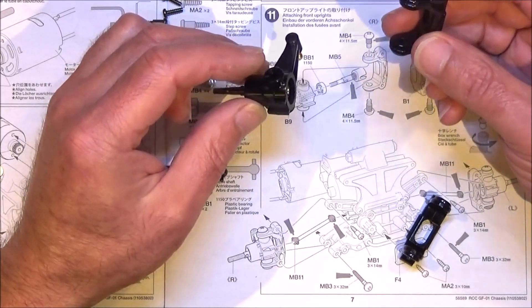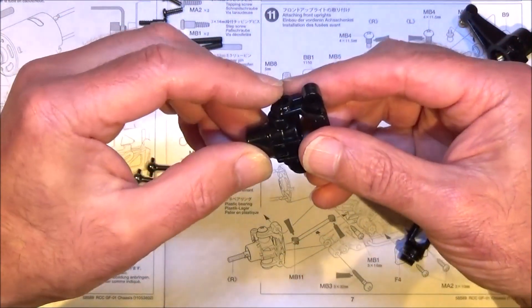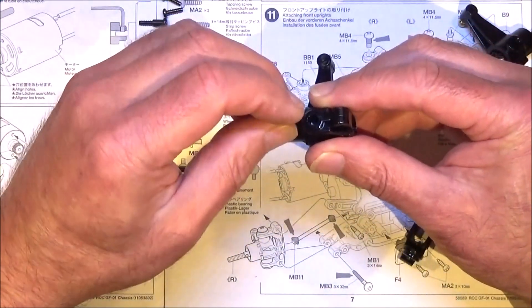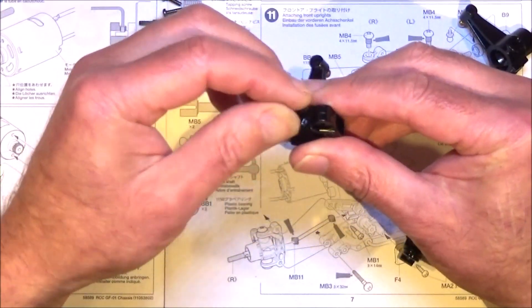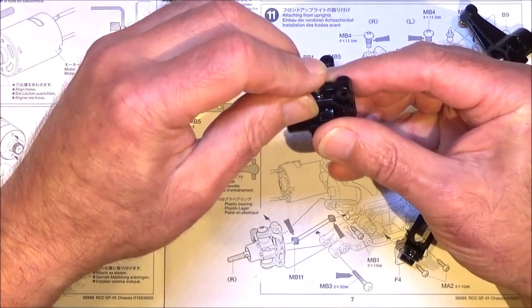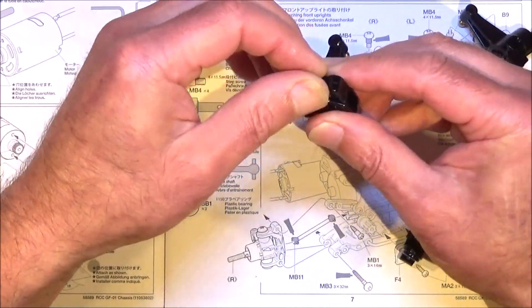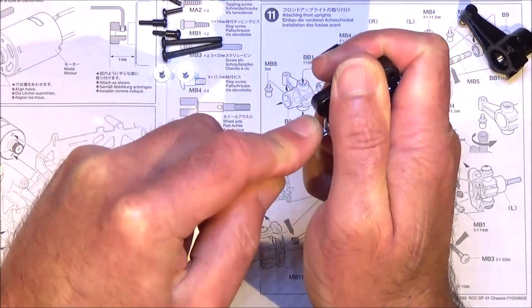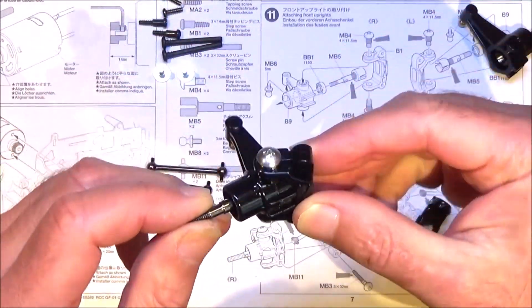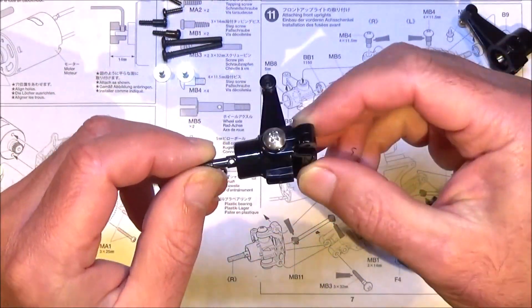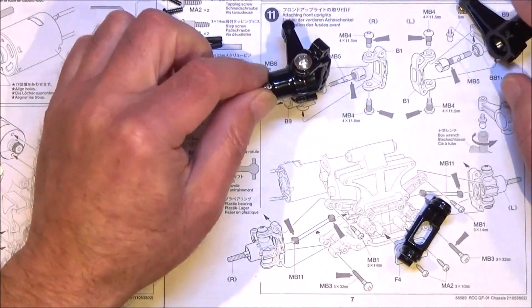We just fit that in there, one of each of these kingpins in the top and the other one obviously goes underneath. So there we go, there's the first one made up. Obviously do exactly the same for the other side.